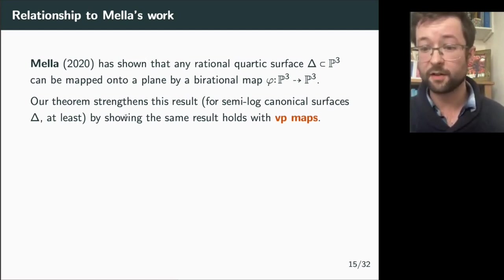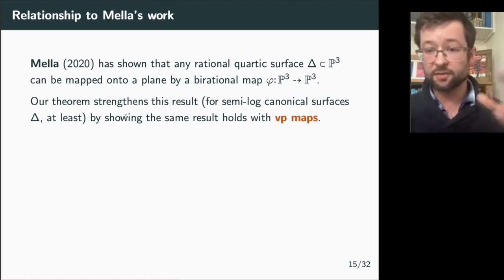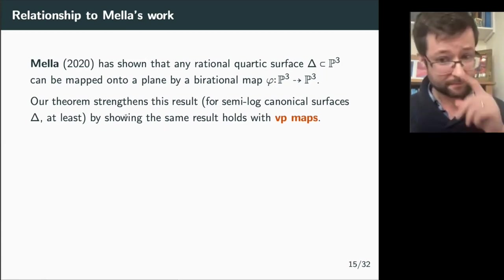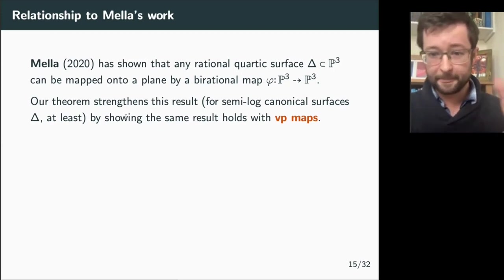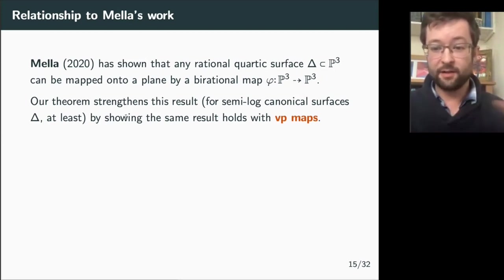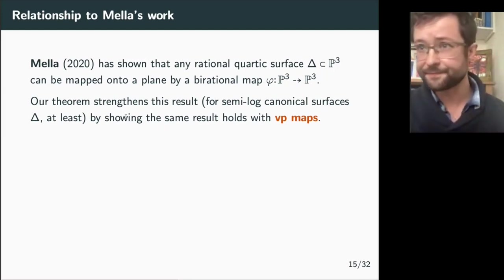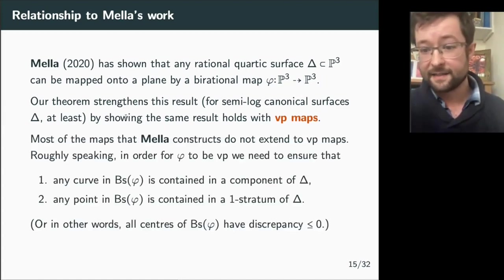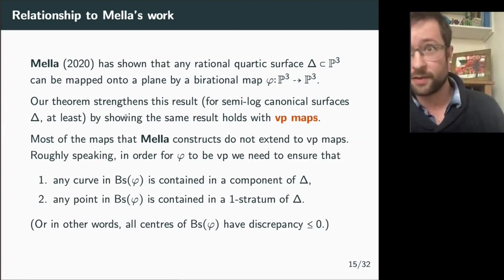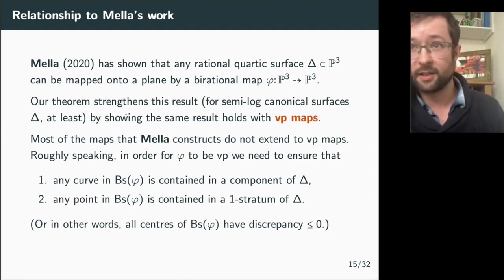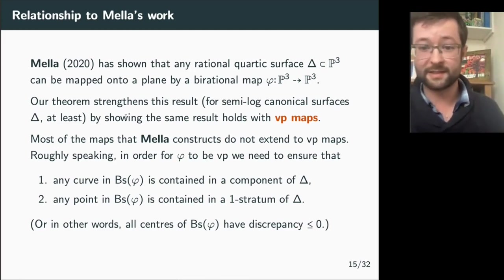However, almost all of the maps Meller uses to untwist these quartics don't extend to volume-preserving maps. For a map to be volume-preserving, any curve in the base locus must live inside a boundary component, and any isolated point in the base locus must be contained in a one-dimensional log canonical center — equivalently, all centers in the base locus must have non-positive discrepancy. Meller is not concerned with this constraint, so I have to be more careful.